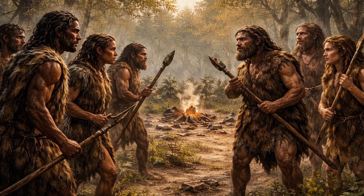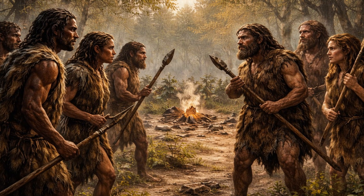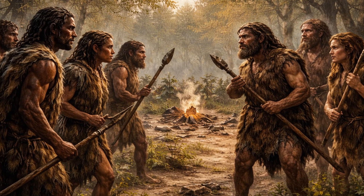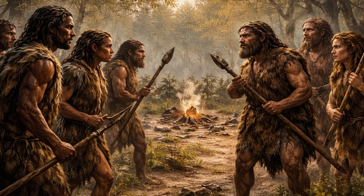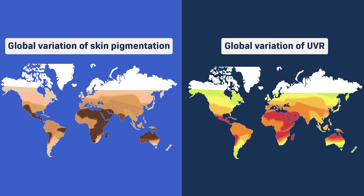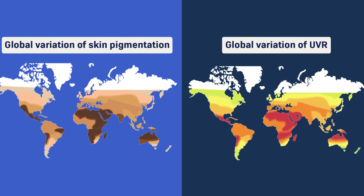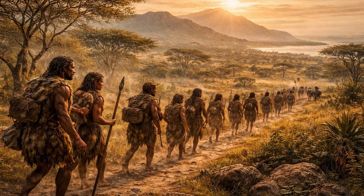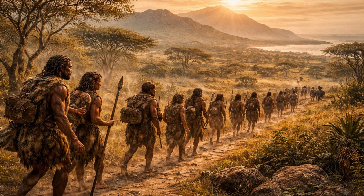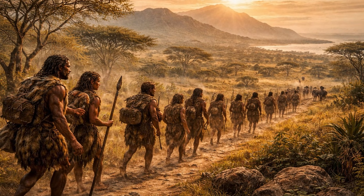Along the way, they encountered and occasionally interbred with other human species such as Neanderthals and Denisovans, leaving small but measurable genetic traces. This migration is foundational because it explains global human genetic similarity and diversity patterns today. In essence, out-of-Africa marks the beginning of humanity as a global species, setting the stage for every later migration, culture, and civilization.